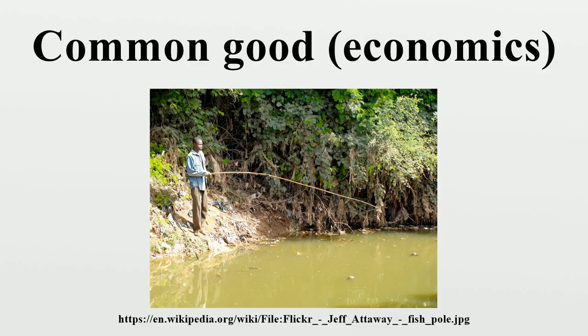If access to the common good is regulated at the community level by restricting exploitation to community members and by imposing limits to the quantity of goods being withdrawn, the tragedy of the commons may be avoided. Common goods which are sustained through an institutional arrangement of this kind are referred to as common pool resources.